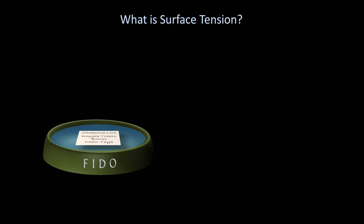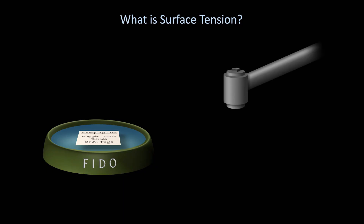Another example of surface tension is the tendency of water to form spherical drops instead of a continuous stream when flowing from a faucet at a relatively slow rate. The drops aren't perfectly spherical on Earth because of the effects of gravity and air resistance. However, water droplets in space, where these are not factors, do form perfect spheres.